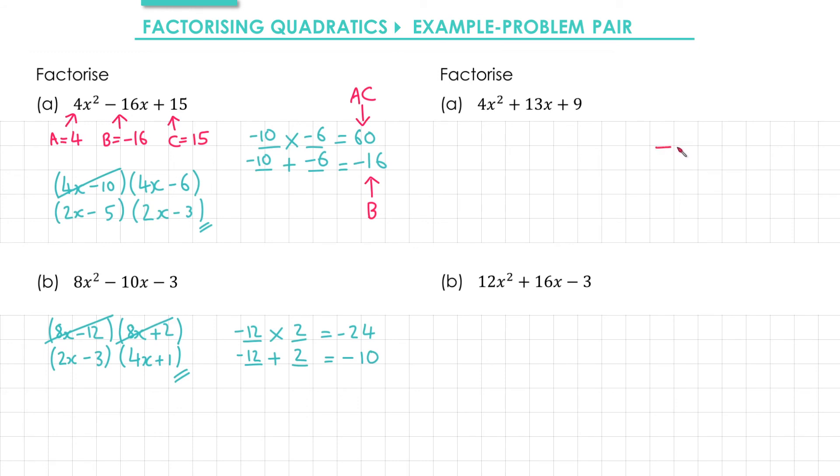To begin with, we want two numbers that multiply together to give a times c, which is 36. We want the same two numbers to add together to give b, which is 13. The numbers we want this time are 4 and 9.